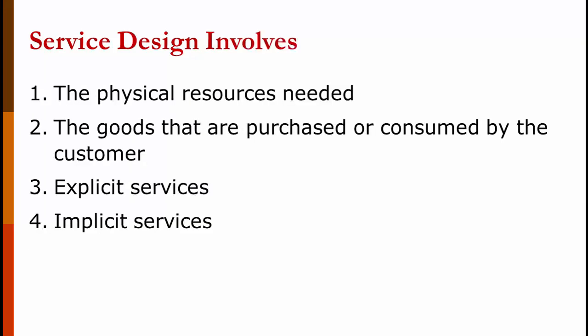Service design includes four components. One: the physical resources needed to deliver the service. Two: the goods that are purchased or consumed by the customer — that's the food at a restaurant, the drinks at a bar. Three: explicit services — that's what you're doing to or for the customer, bringing them food, giving them a physical, cutting their hair. And four: the implicit service. With a haircut, for example, it's implied that you will look better after you leave the barber than before. With a nice restaurant, it's implied that you'll have a romantic atmosphere. These implicit services are very important in service design and unfortunately can be easily overlooked.